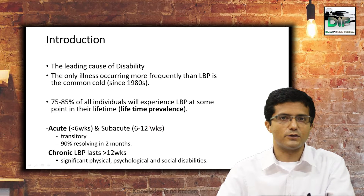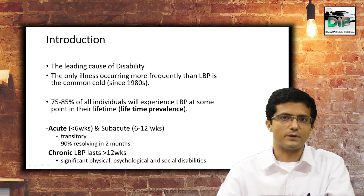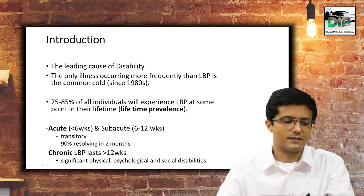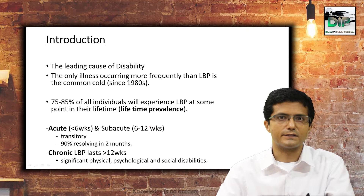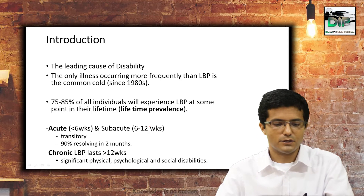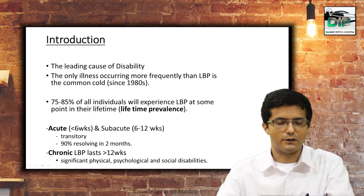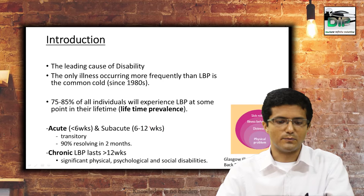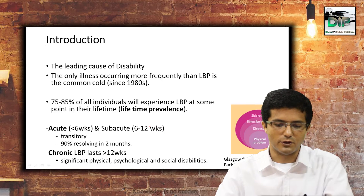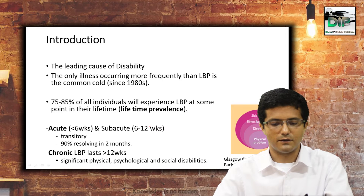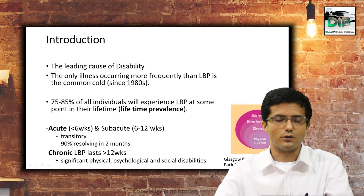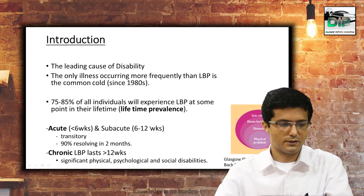Acute and sub-acute low back pain cases usually recover within 2 months in 90 percent of cases. Whereas chronic low back pain, lasting more than 12 weeks, is associated with significant physical, psychological, and social disabilities. There are important psychosocial and psychosomatic associations with chronic low back pain, as shown in the Glasgow illness model of low back pain disability, in which emotional distress, illness behavior, and sick role also play a major role.